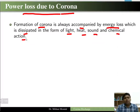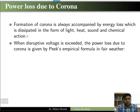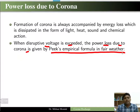Whenever there is a corona, there will be an energy loss in the form of light, heat, sound, and chemical action. When the disruptive voltage is exceeded, the power loss due to corona is given by Peek's empirical formula under fair weather conditions.